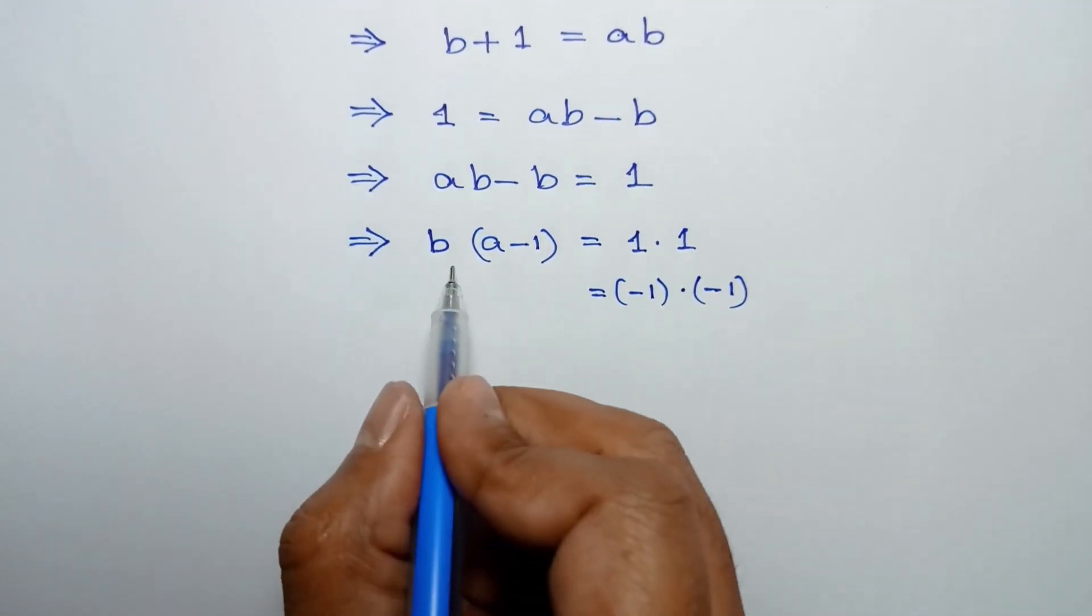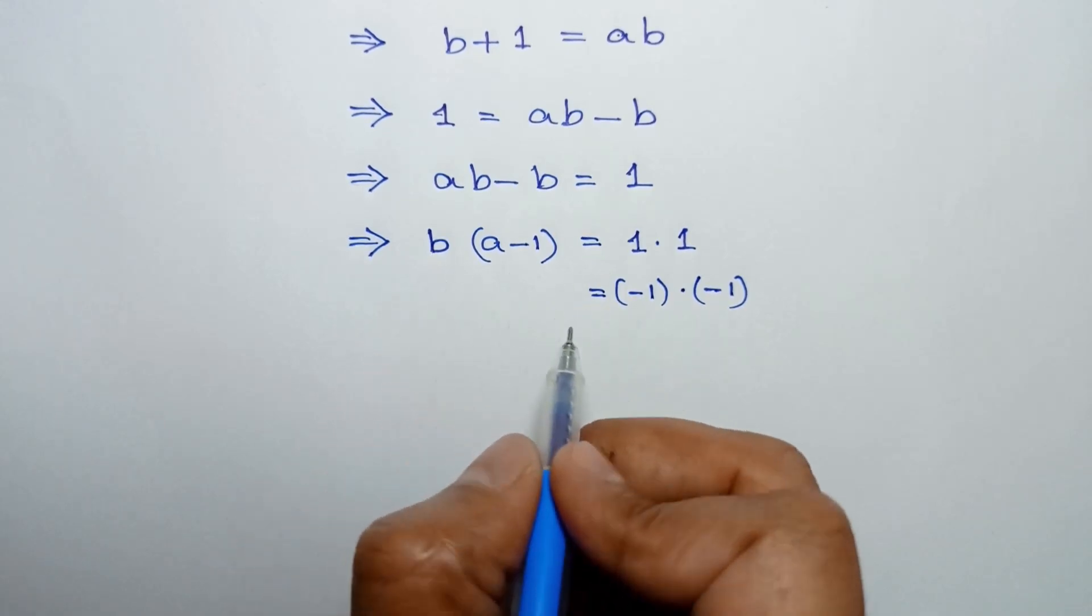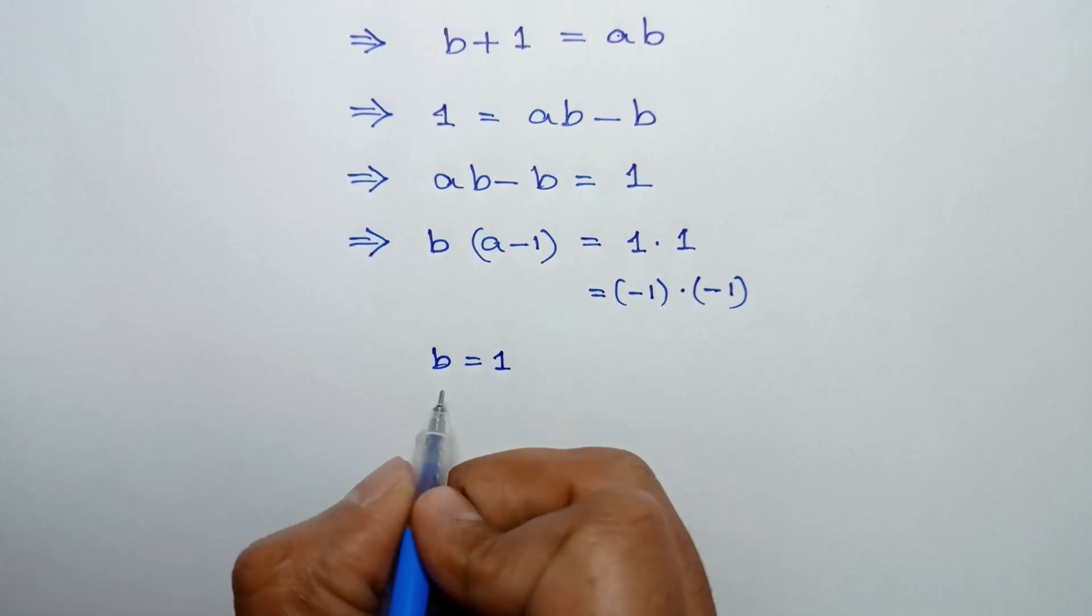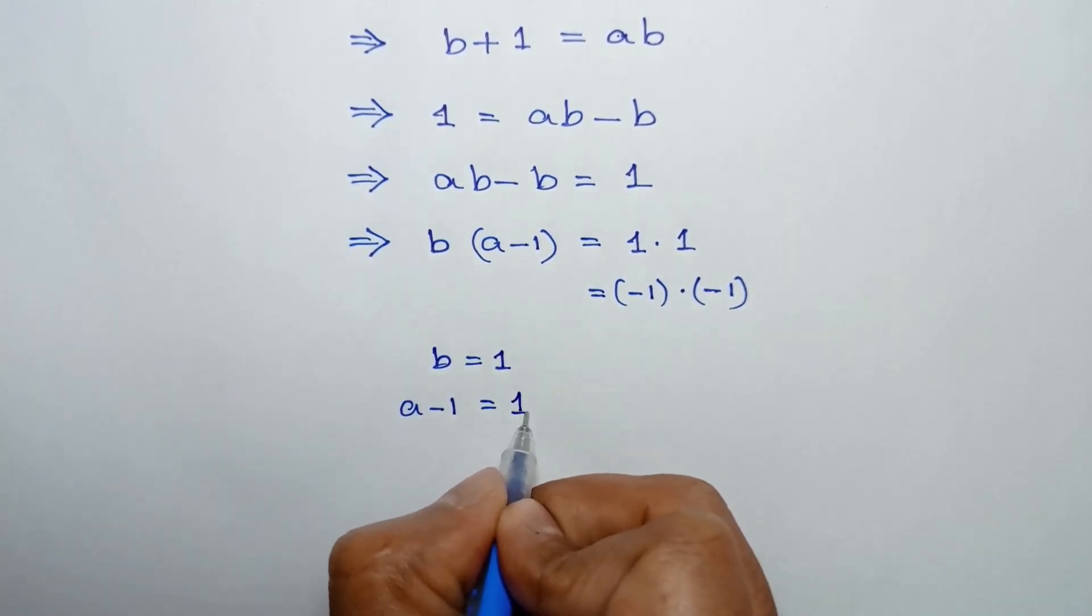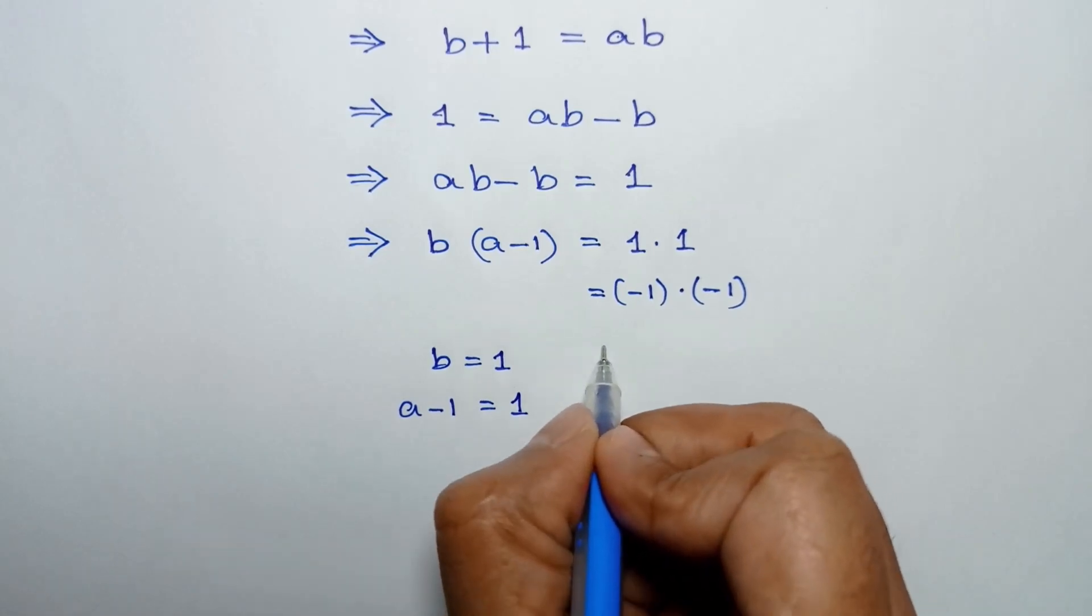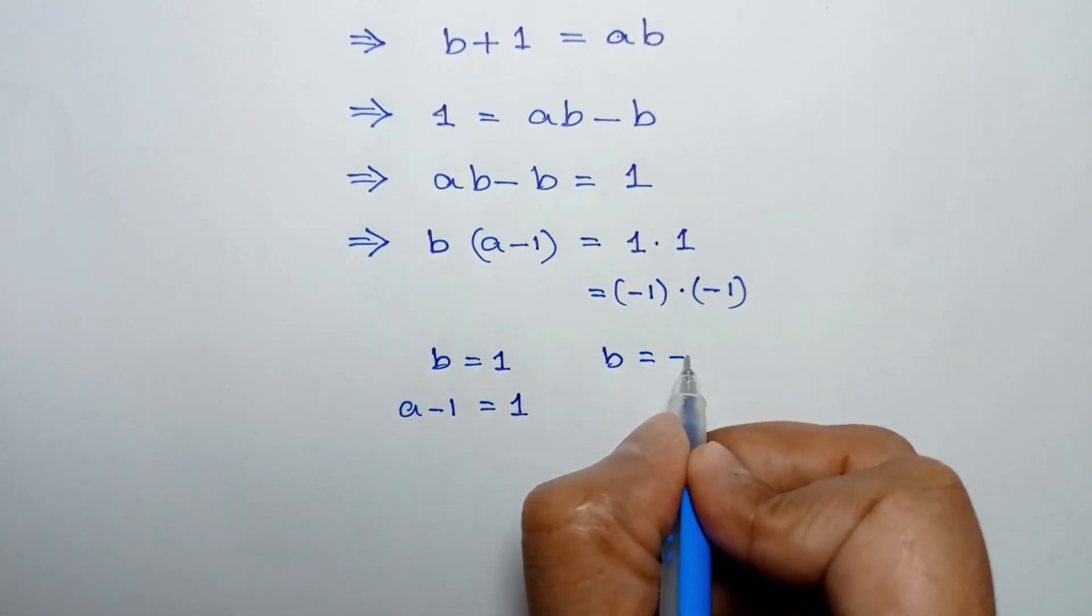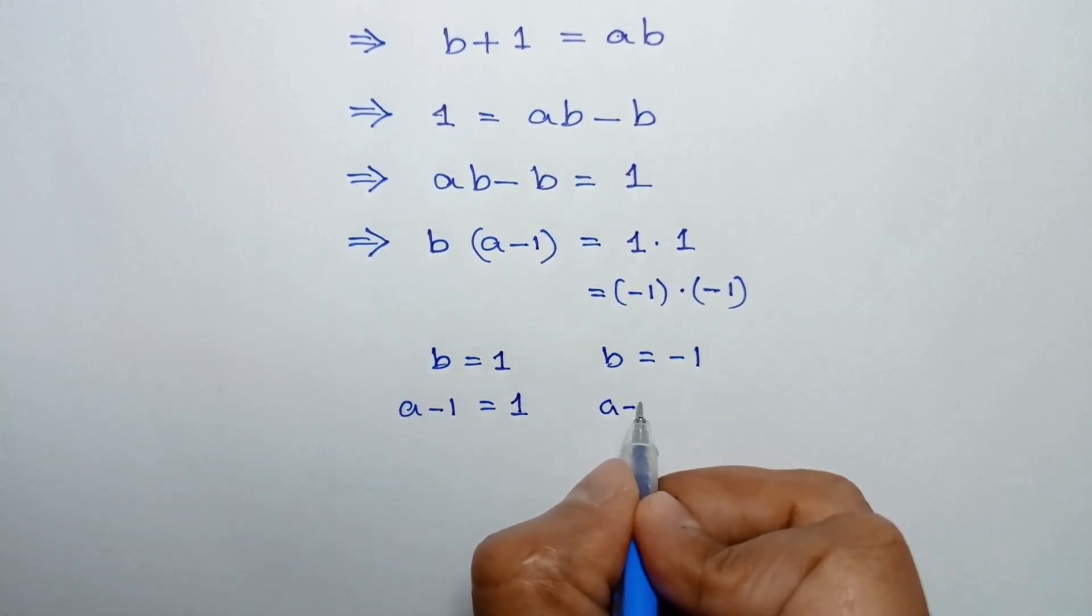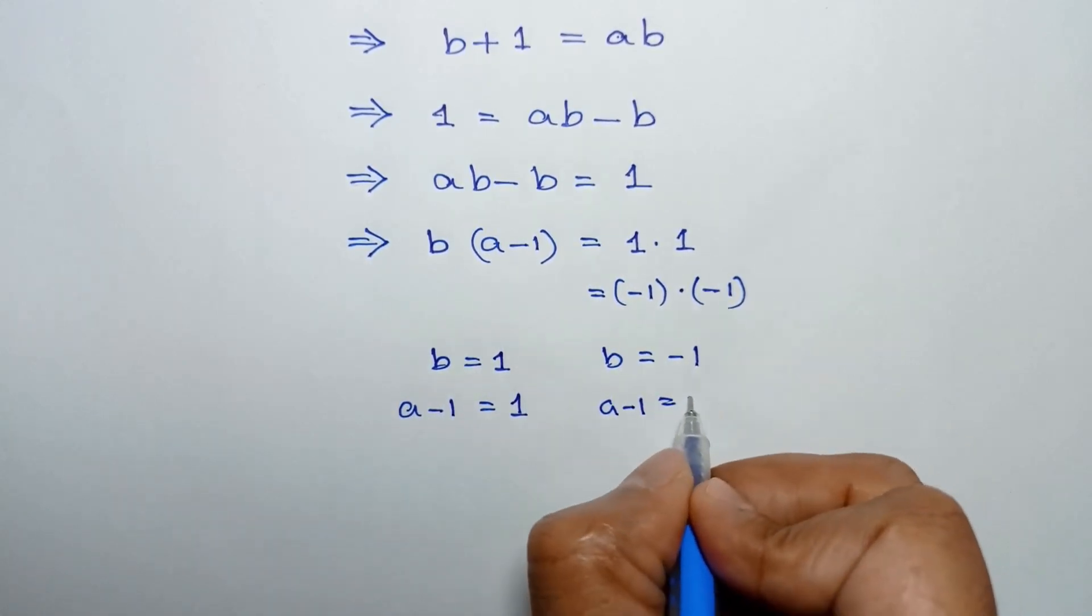Now, for integer solutions, we can write b = 1 and a - 1 = 1, or b = -1 and a - 1 = -1.